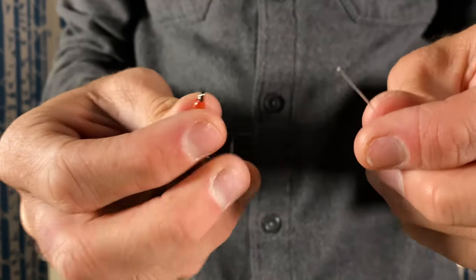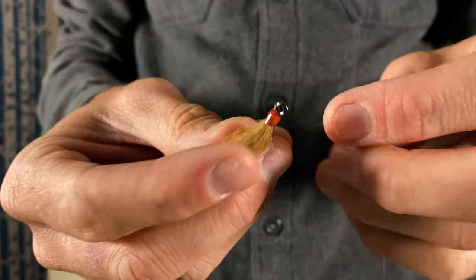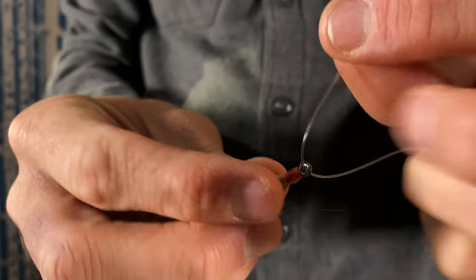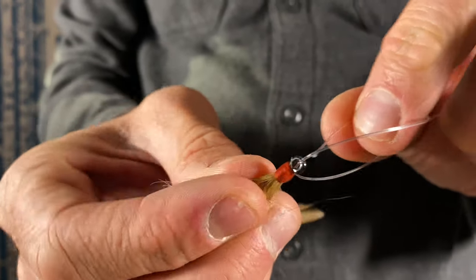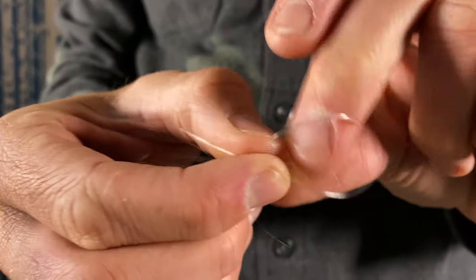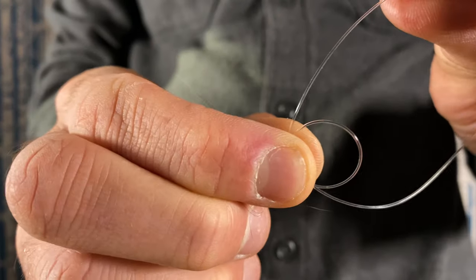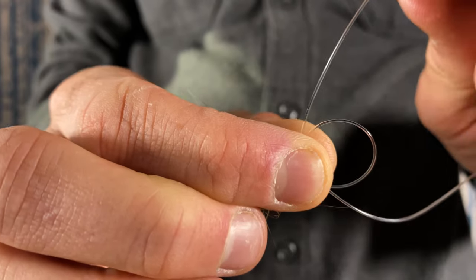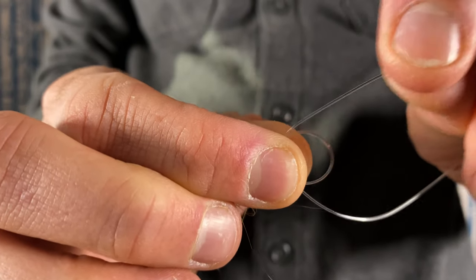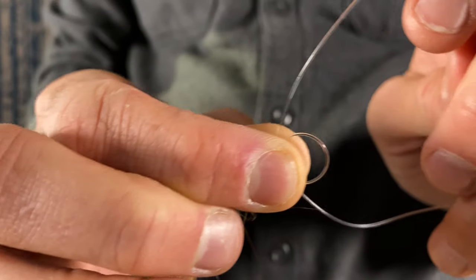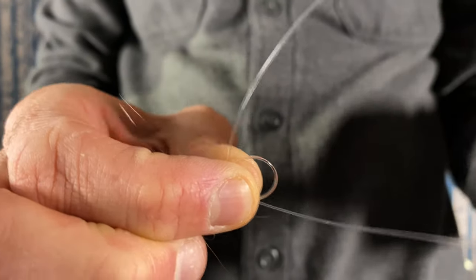So the way to tie this improved clinch knot is to run the line through the eye of the hook twice - that makes a little loop. In the hand holding the fly I hold that loop. If this looks backwards it's because I'm left-handed, so lefties unite, this video is for you guys. I hold that and then sometimes I'll hold the leader straight just to keep everything taut and tidy.